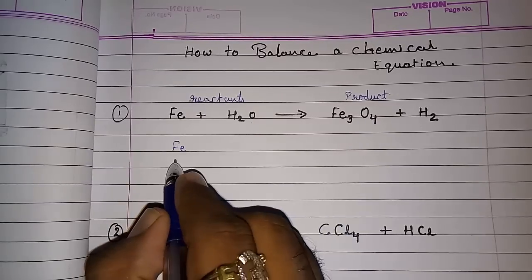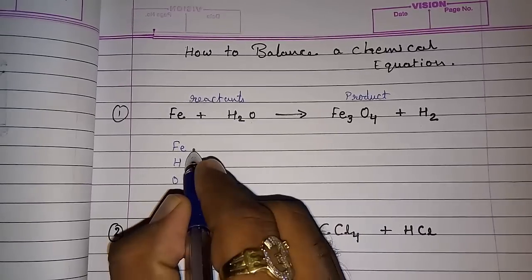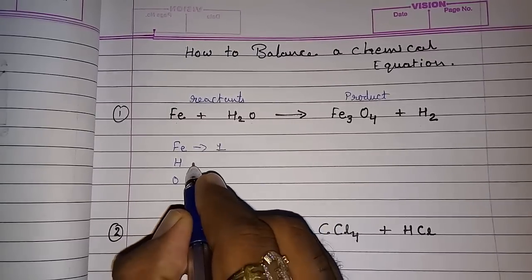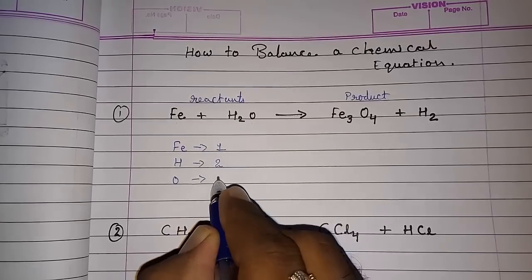This is iron, Fe, hydrogen and oxygen. And how many atoms are there? We can see here it's one, hydrogen is two and oxygen is also one.